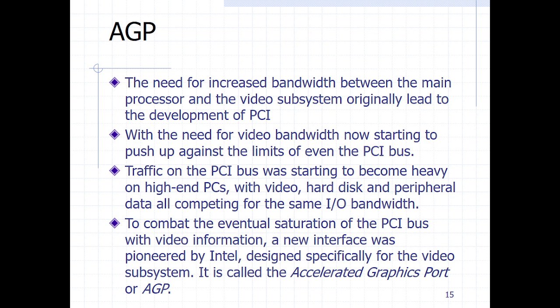And of course we have the Accelerated Graphics Port — AGP. AGP was brought to actually support the video or graphics component of the computer. It was established that the processor alone could not handle a lot of video processing requests. So there was a need to have a standalone bus to handle all related video and graphics processing requirements, so that it could relieve the main processor from these additional processing activities.